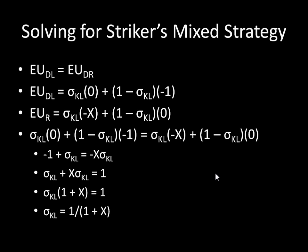Setting the two expected utilities equal and solving for sigma_kl: because x is positive, we can divide by (1 + x) since it's not equal to zero. That leaves us with sigma_kl equals 1 over (1 + x). Notice this is a valid probability: 1 is positive, 1 + x is positive, and since x is positive, 1 + x is greater than 1, so this is indeed a probability between zero and one. This is the striker's mixed strategy.